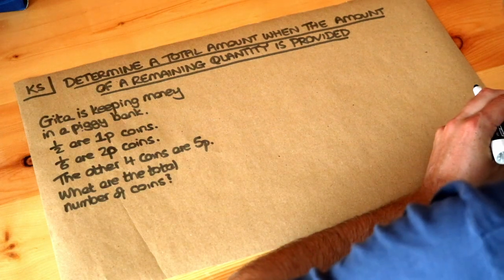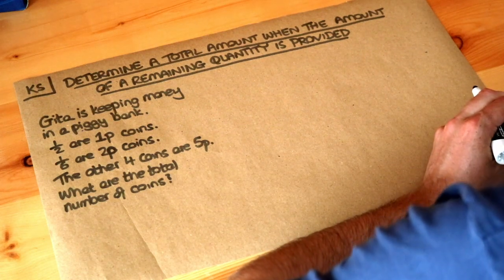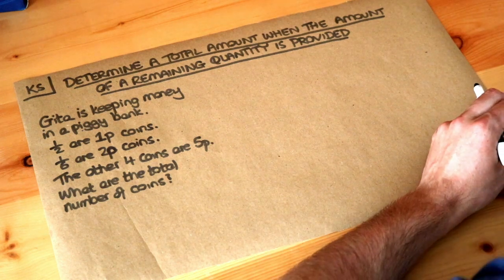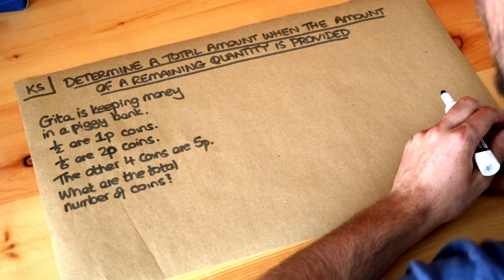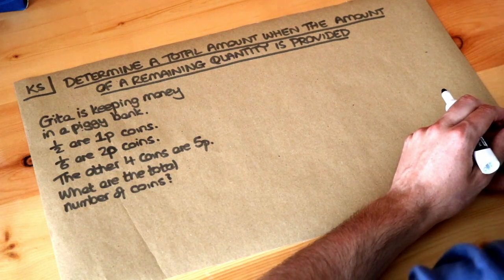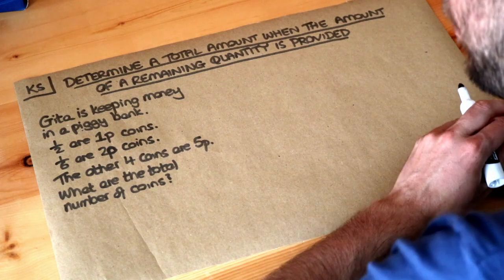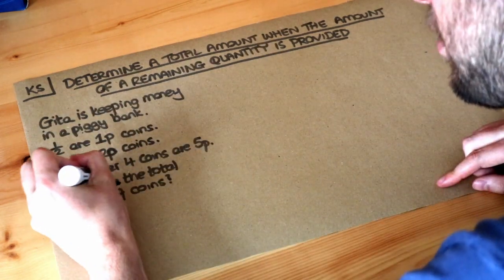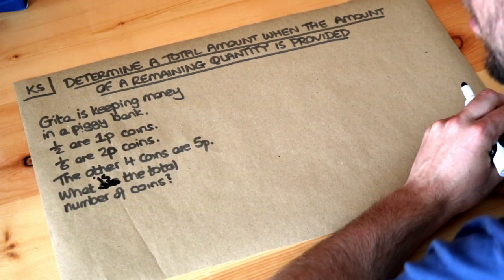Hello and welcome to this Dr Frost video on determining a total amount when the amount of the remaining quantity is provided. Let's read the question. Gita is keeping money in a piggy bank. Half of the coins are 1p coins, a sixth of the coins are 2p coins, and the other four coins are 5p. What is the total number of coins?